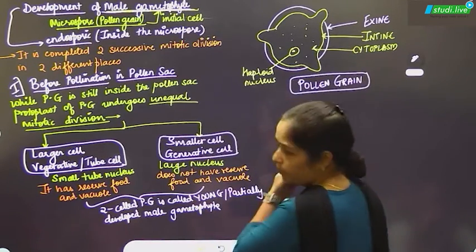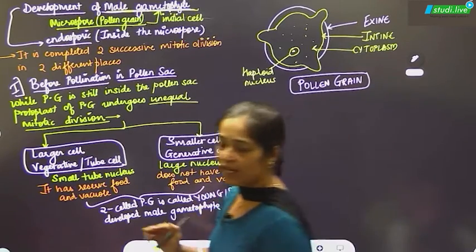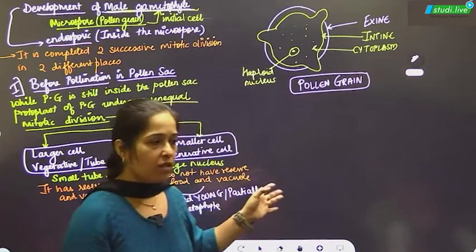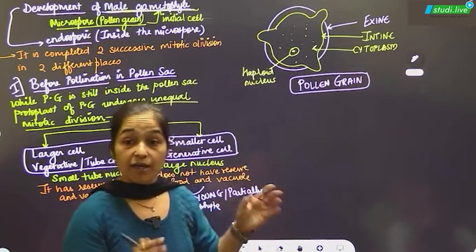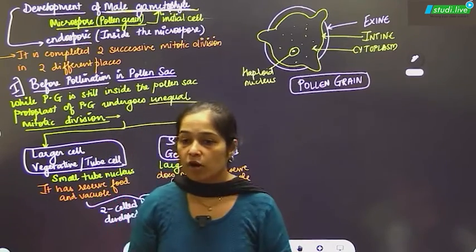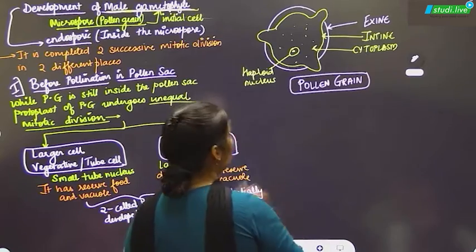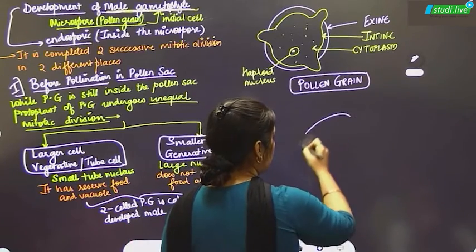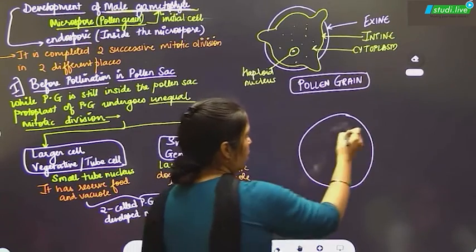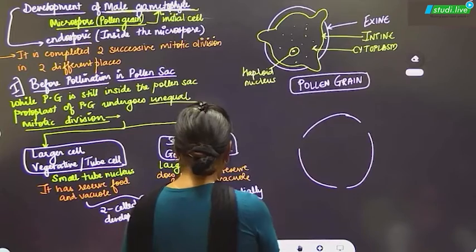This is the pollen grain diagram which you have already seen in the previous answer. When we represent this diagrammatically, the protoplast of the pollen grain divides to form two unequal cells. We draw a circle and an oval shape — both with eraser rubbings at three points.